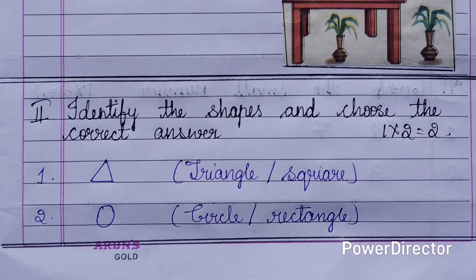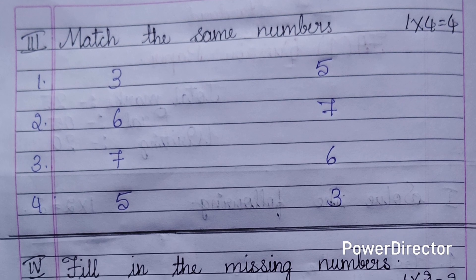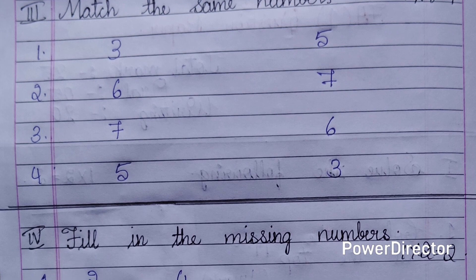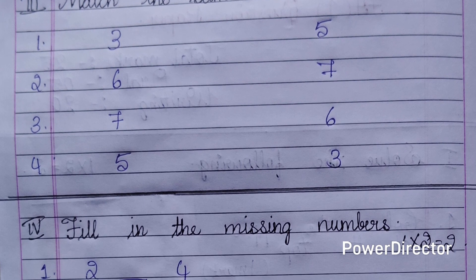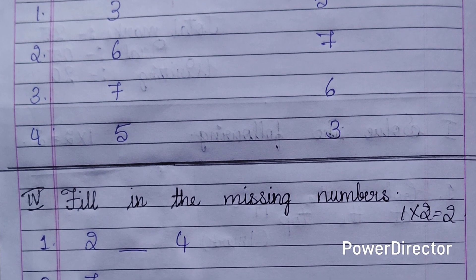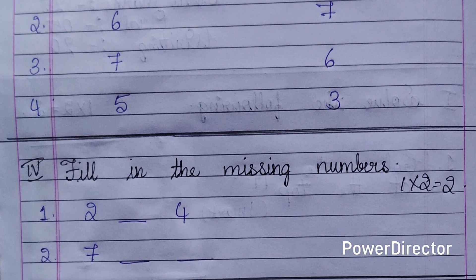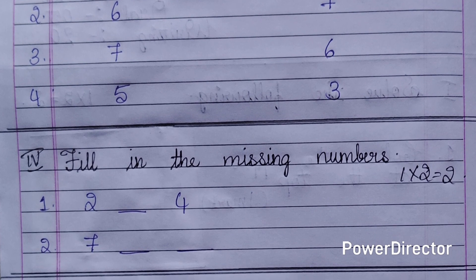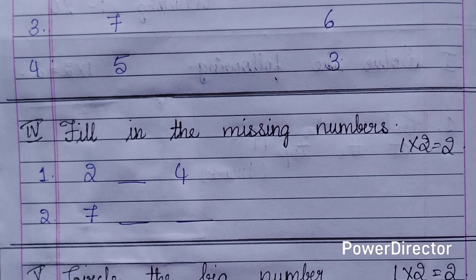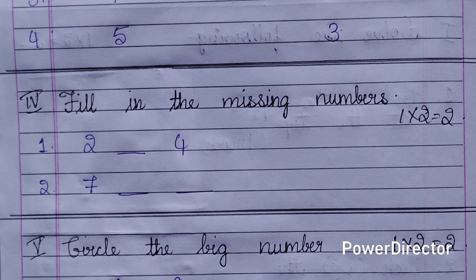Third main: match the same number. On the left side, different numbers are given and on the right side, different numbers are given. Four questions are given, each question carries one mark, four marks for this main. Children have to match the same numbers. Since they are first-graders, let us make the first assessment easier for them.